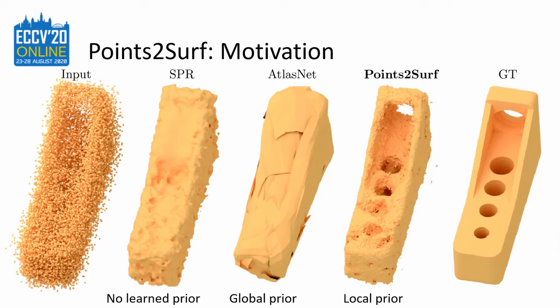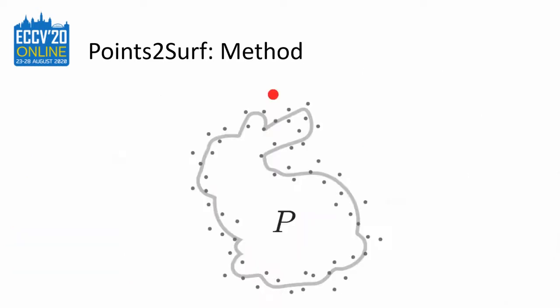Our method, on the other hand, learns a local shape prior that improves robustness and accuracy without losing generalization performance. Our neural network predicts a signed distance from a query point, here in red, to a surface that is sampled with noise, here in gray.